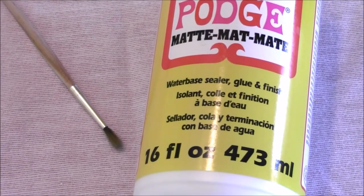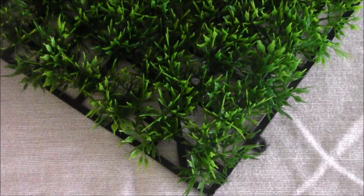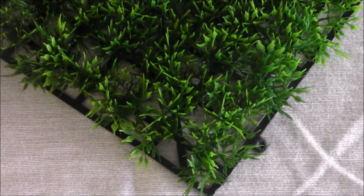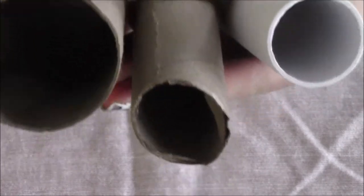Some type of sealer like Mod Podge - that's optional depending on what paint you're using, a thin type of cardboard, mine is from a tissue box, and again optional, some silk plants that I'm using for decoration on top when it's done.